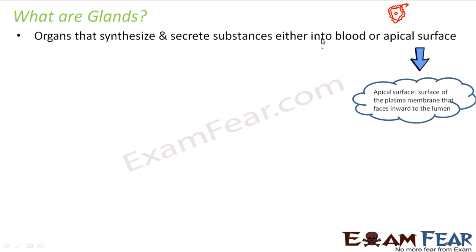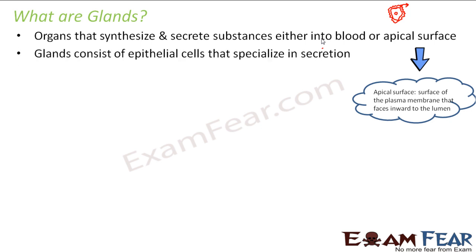There are two ways glands can secrete materials: either they secrete materials directly into the blood, or they secrete materials into the apical surface of some cells — meaning directly into those cells. These glands consist of epithelial cells that specialize in secretion.